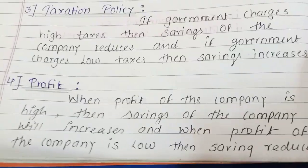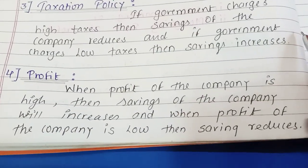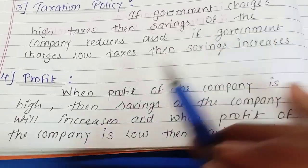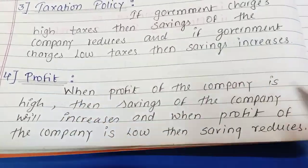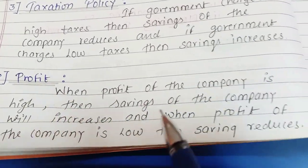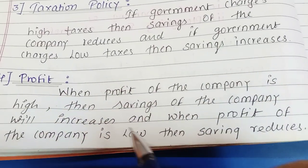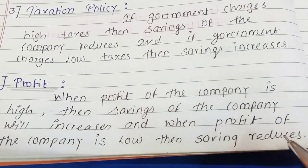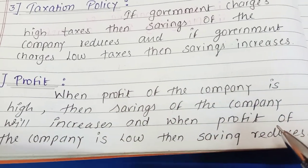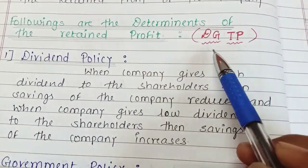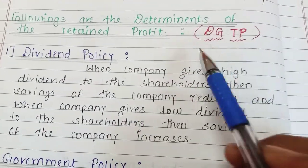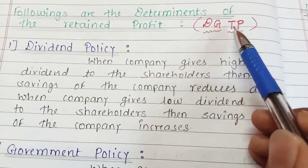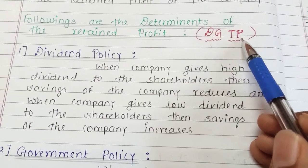Fourth is profit itself — it is simple. When the profit of the company is high, then the saving of the company will increase. When the profit of the company is low, the saving of the company will reduce. To remember, the code is DGTP: Dividend Policy, Government Policy, Taxation Policy, and Profit.